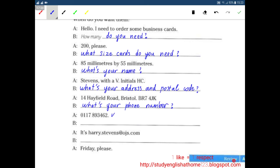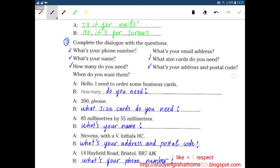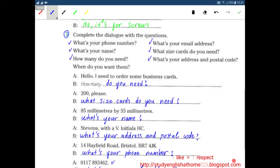Then is harrystevens at OJS.com so this is email address so the question is what's your email address. Friday please so the question is the last one when do you want them?